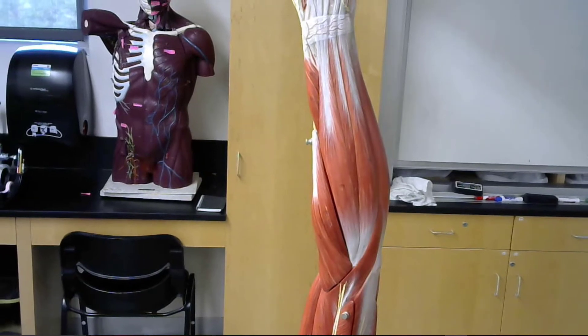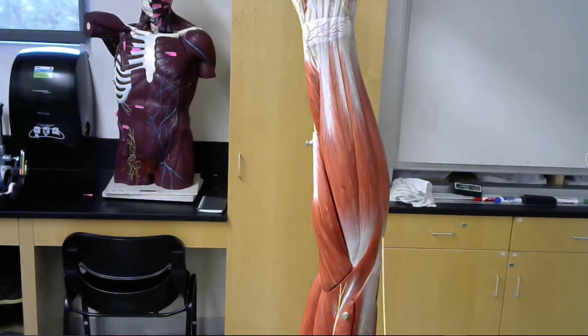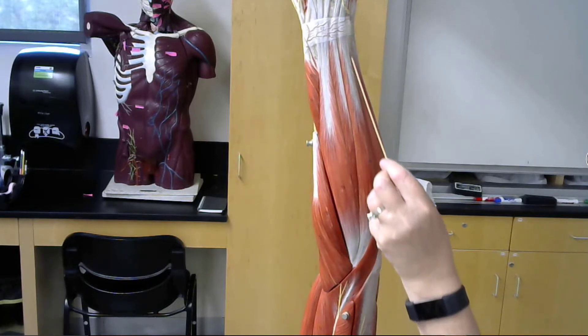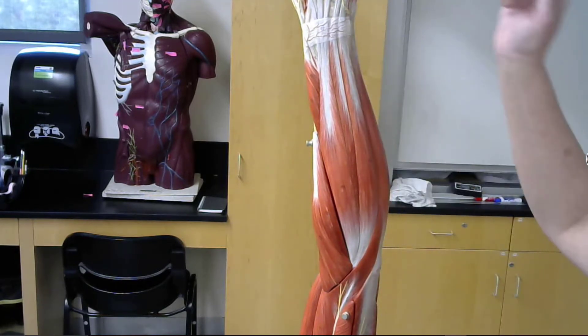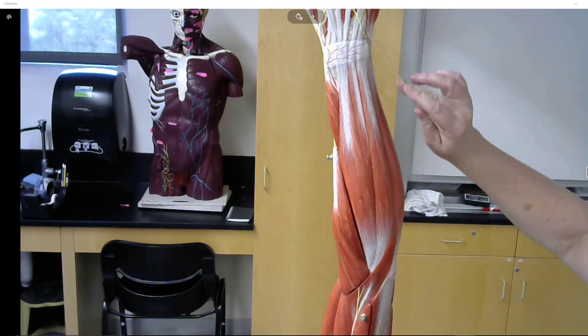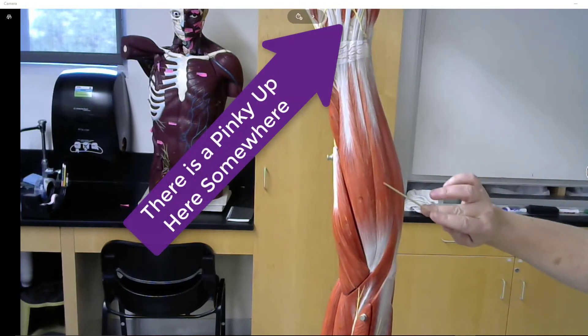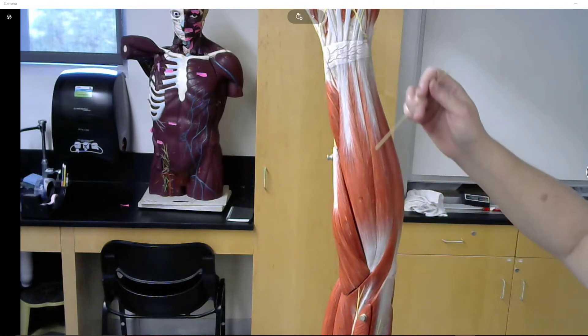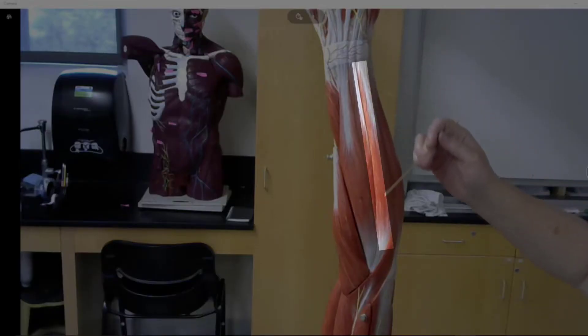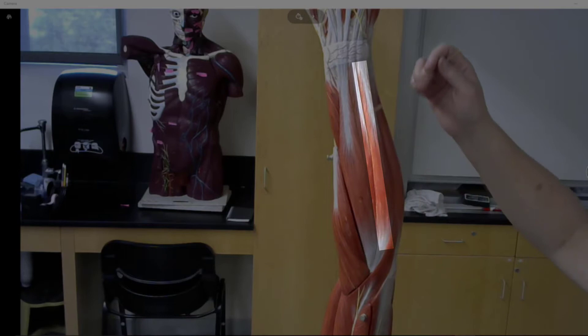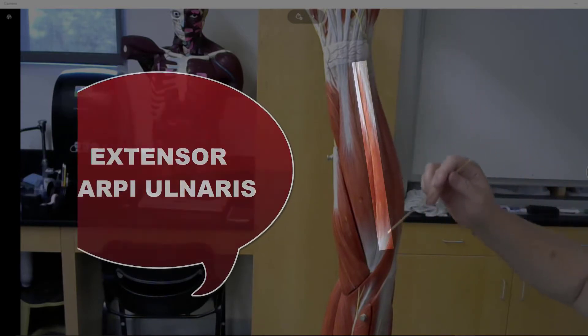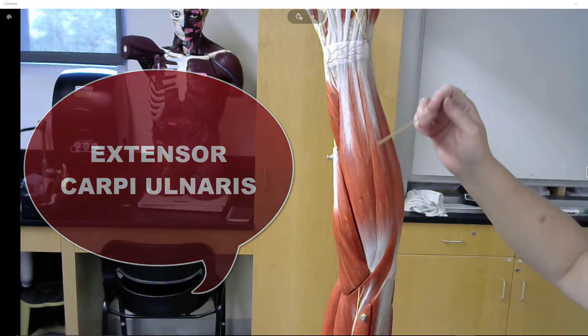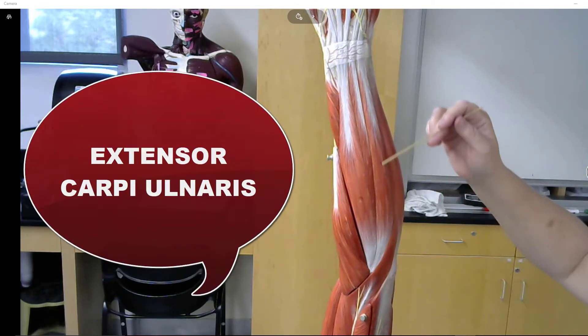And this will lead me off to this crease, which will lead me up to the pinky. So, if I'm looking at the pinky and I'm staying on the posterior side, I'm going to end up right here. This muscle is the extensor carpi ulnaris.